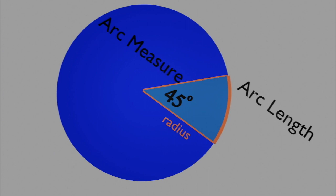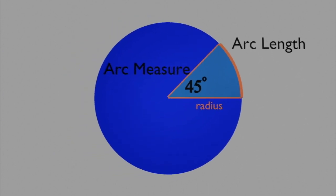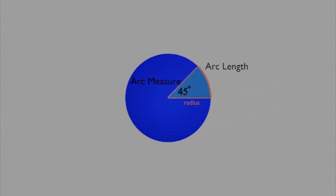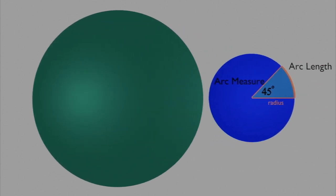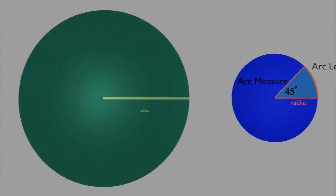I'm going to draw another circle, a green circle, that has twice the radius of the blue circle. Now I'll draw on a radius that's twice the length of the radius of the blue circle.